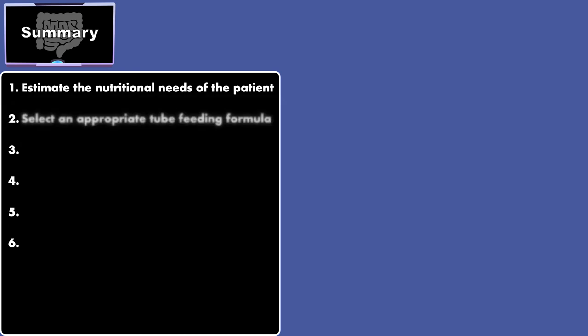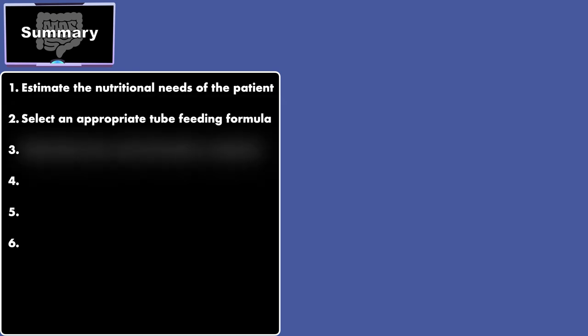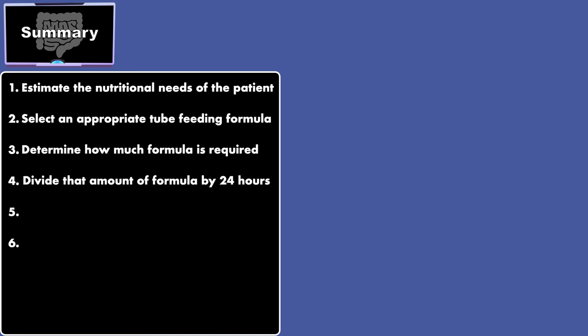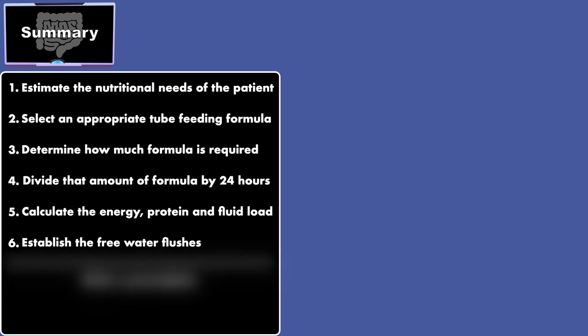Here is a summary for this lesson. When it comes to calculations for continuous tube feeding, you can follow a 6-step algorithm. First, you estimate the nutritional needs of the patient. Then, you select an appropriate formula, determine how much formula is required, and divide that amount by 24 hours to get the feeding rate. Next, you calculate the energy, protein, and fluid load, and establish the free water flushes. To finish the order, you write a prescription.